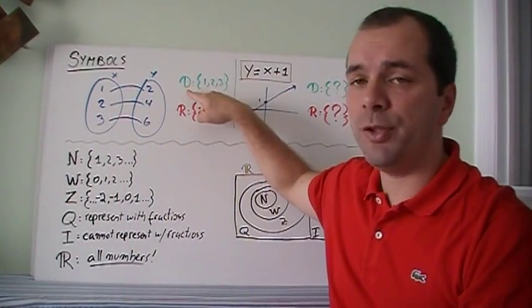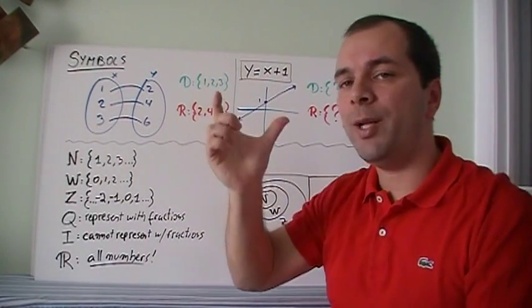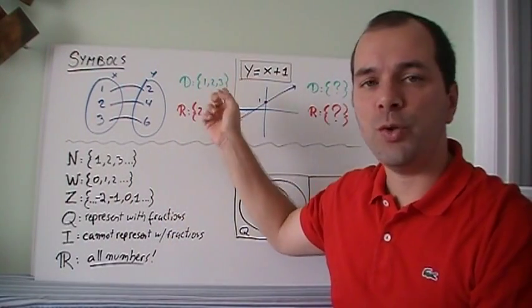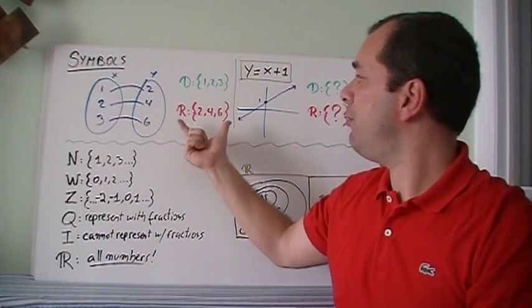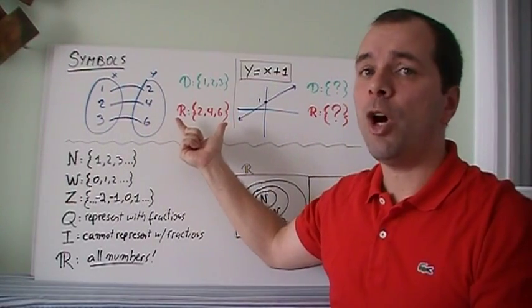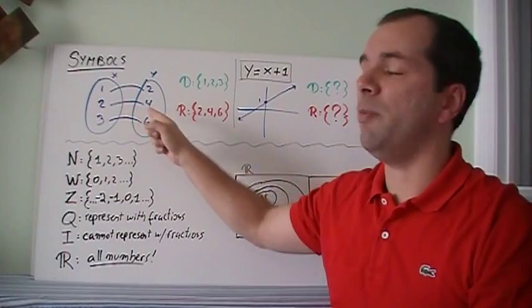Well, I'm going to put a D for domain, squiggly brackets to denote a set, and then just state them 1, 2, 3. And then for the range, same thing, 2, 4, 6, because those are the only outputs. And that's okay.